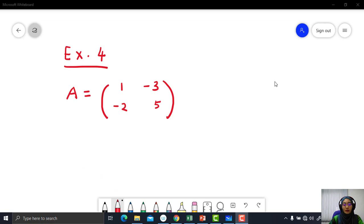Exercise 4: given that matrix A equals 1, negative 3, negative 2, 5, and you need to find its determinant.